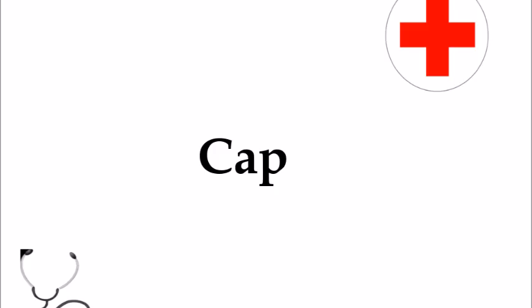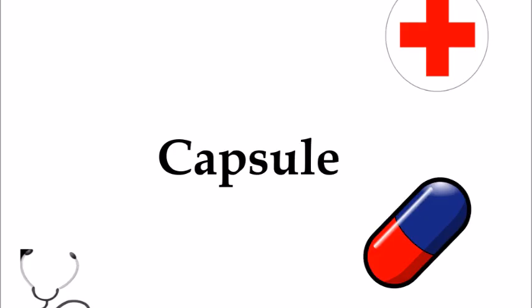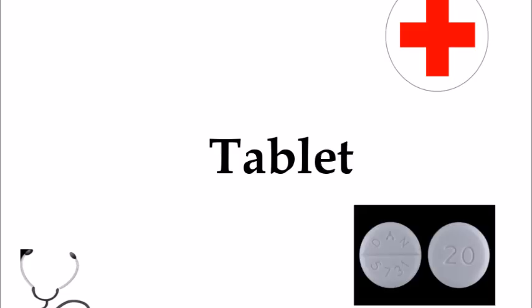The next abbreviation is CAP, which stands for capsule. That's just like the image that I'm showing on screen right now. Those types of pills you can actually pop open and there's a powder inside and that's the medication itself. And then the next one is TAB, which is another type of pill. It's a tablet. So you can cut these in half, you can crush them, you can take them whole depending on the dose.